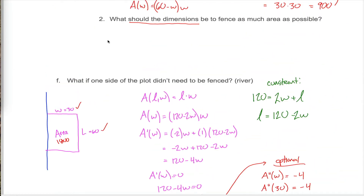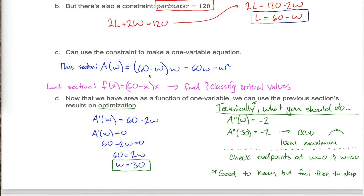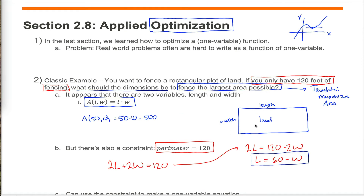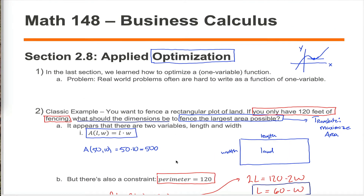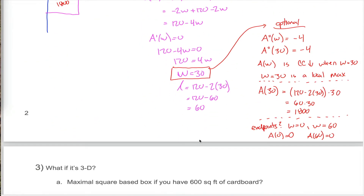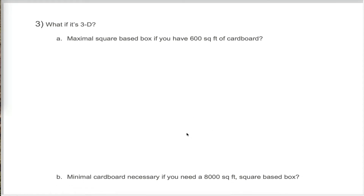In the last video, we learned about applied optimization, and we did the classic problem where you're trying to maximize the amount of land you could fence in a rectangular plot if you only have a given amount of fencing. What I want to do in this video is just another example, doing the same thing, but it might feel a little bit different, so I think it's beneficial to go through the example.